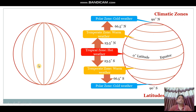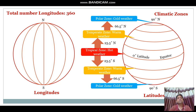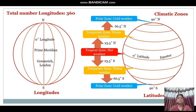Longitudes, or meridians, run from the northern pole to the southern pole. The total number of longitudes on Earth's surface is 360. The zero degree longitude is also known as the prime meridian, which runs through Greenwich city in London, United Kingdom. The time at Greenwich is known as GMT, which stands for Greenwich Meridian Time.